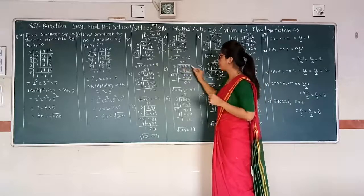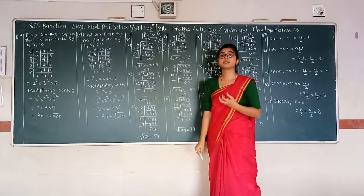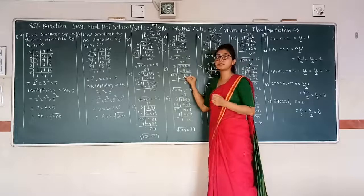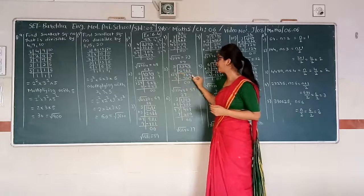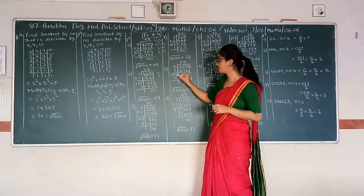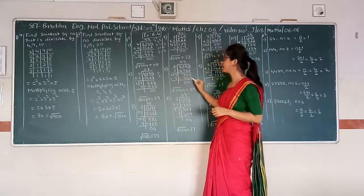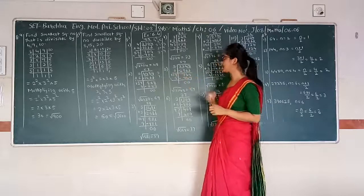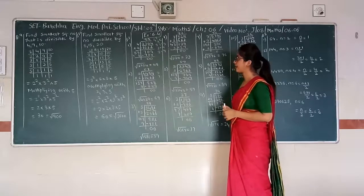Next: 3249. We have two pairs: 49 and 32. 32 has nearest perfect square 25. Therefore 5 times 5 is 25. 32 minus 25 gives 7. Take 49 downward, giving 749. 5 plus 5 gives 10. Unit digit is 9; 7 sevens give 49. We take 7. 107 times 7: 7 sevens are 49, write 9 carry 4; 7 zeros are 0 plus 4; 7 ones are 7. 749 minus 749 gives 0. Therefore, square root of 3249 is 57.